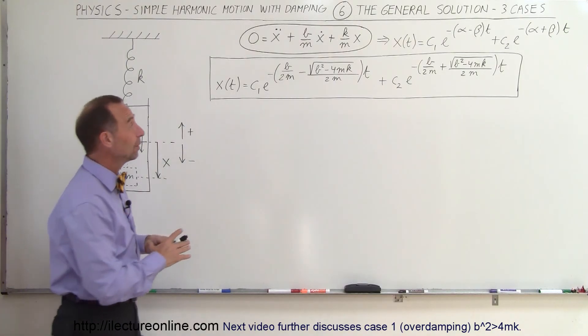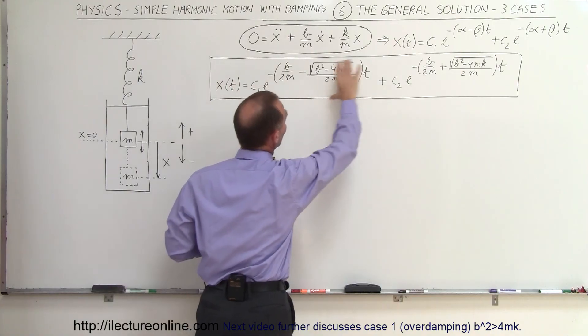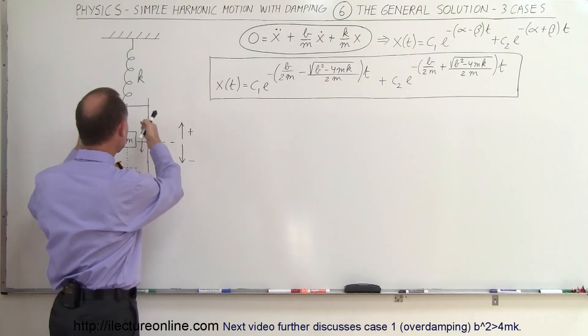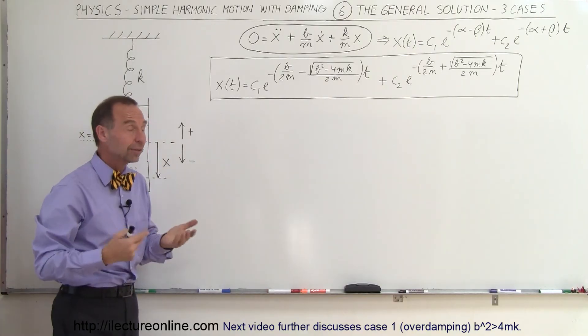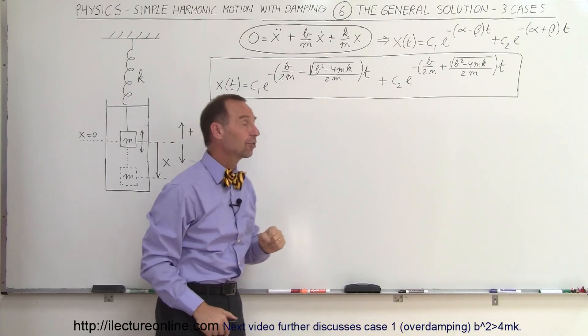Now just so we have this in the reference, here was the differential equation and here's the solutions, keeping in mind that B is the constant that is relative to the amount of damping. The bigger B, the more damping you have. M is the mass of the object and K is the spring constant.